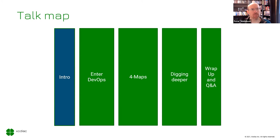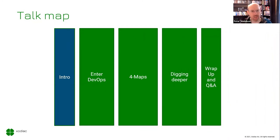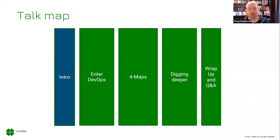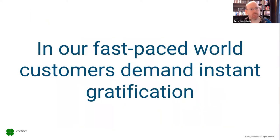Quick rundown of what we're going to be talking about today. We'll run through this talk map, have a quick introduction to the industry — what's changing and what that's looking like. We're going to talk about DevOps and how it helps us make changes, how the Four Maps can help you construct a model for this, and how they feed into each other, before wrapping up with some Q&A.